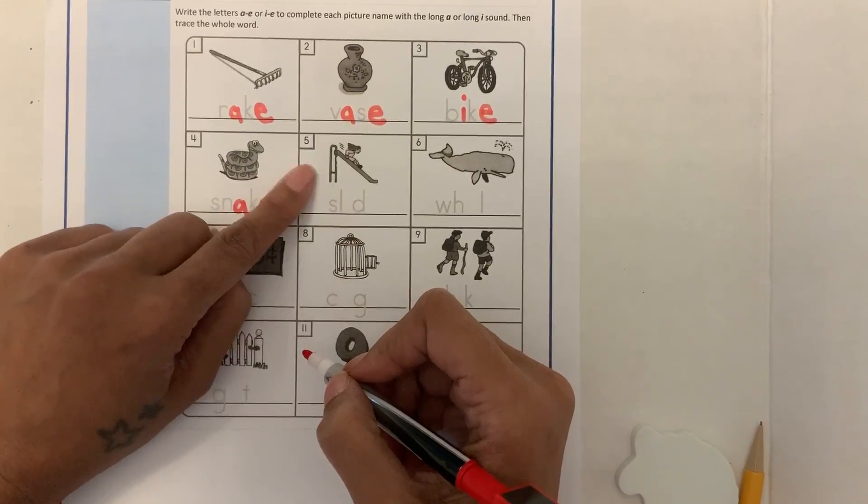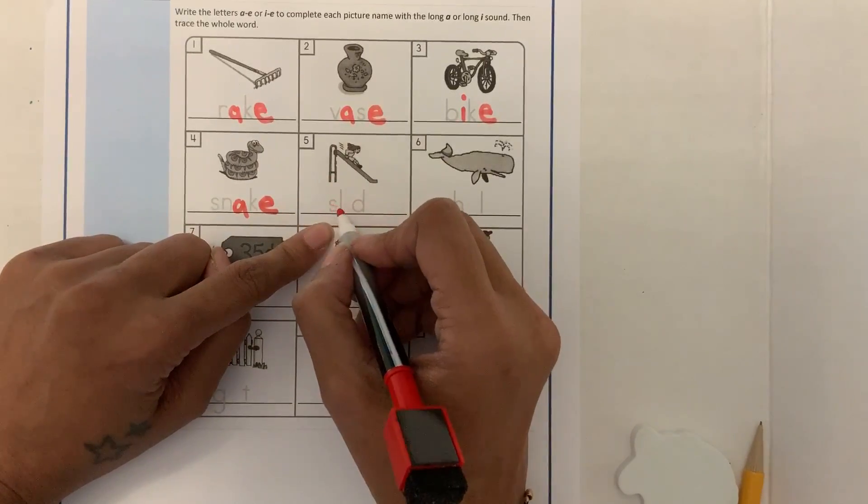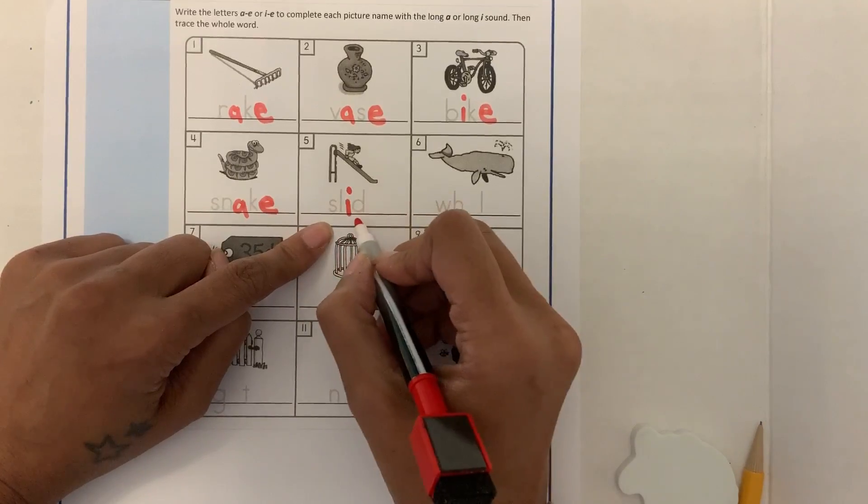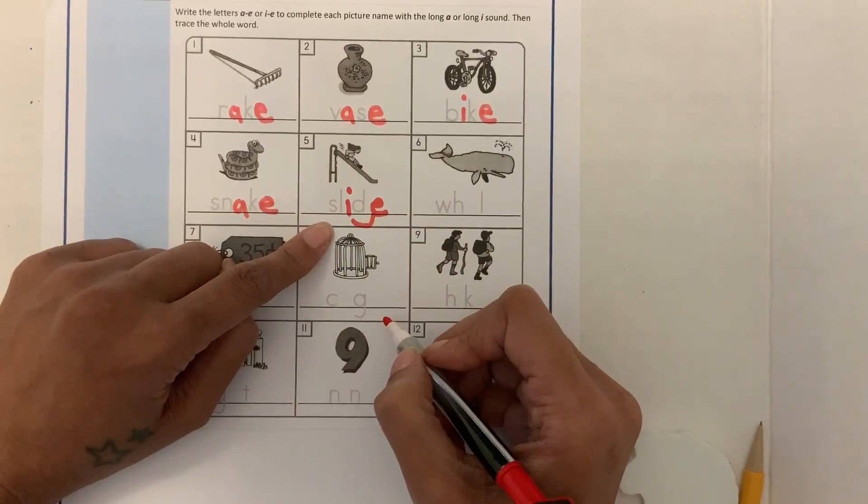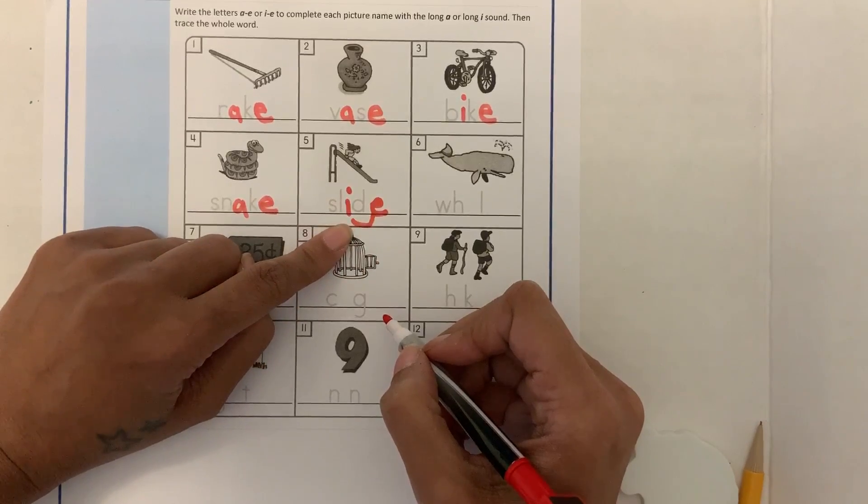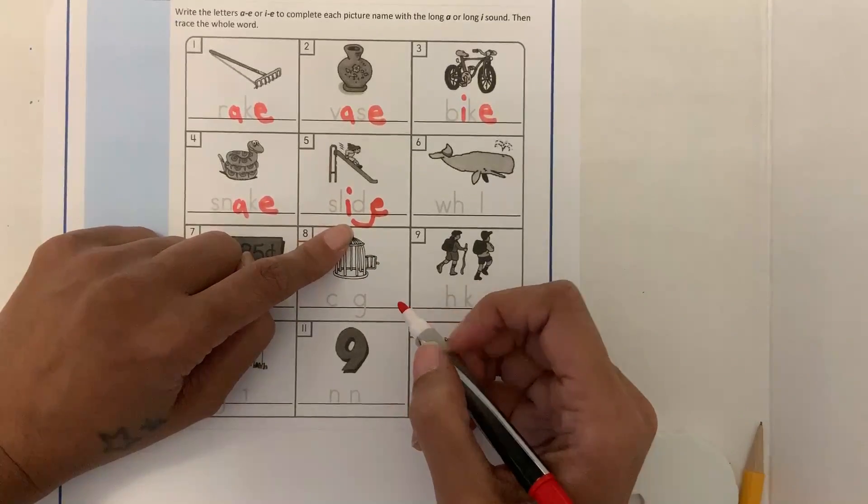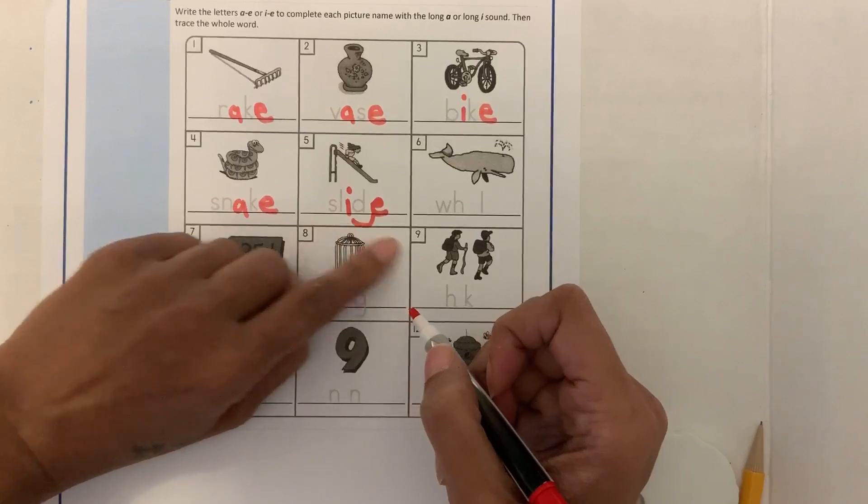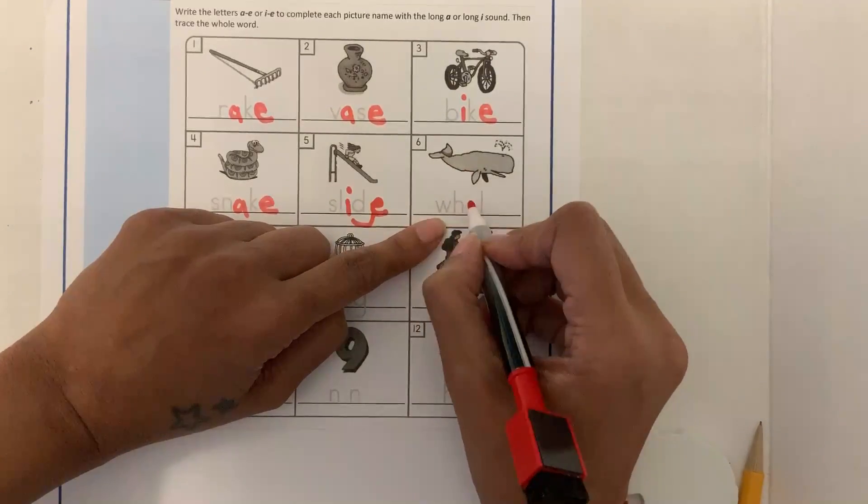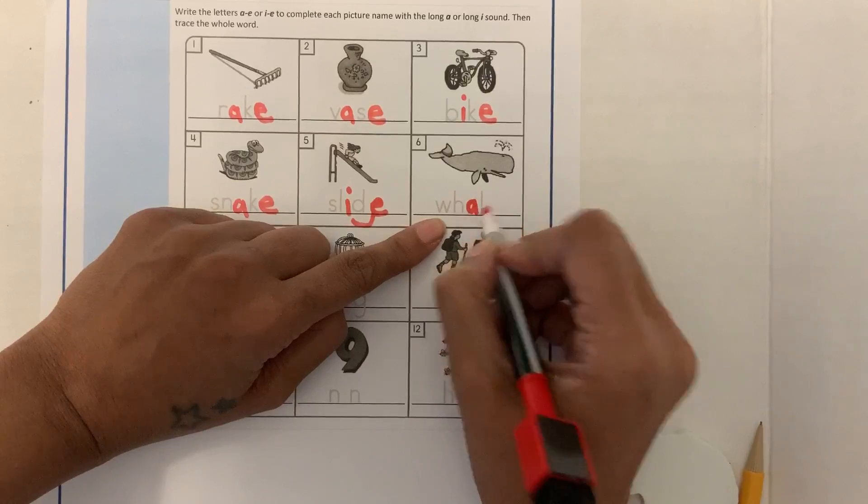Slide. And remember we're always going to add the silent E because that's making the I change to I. Whale. We have the A.